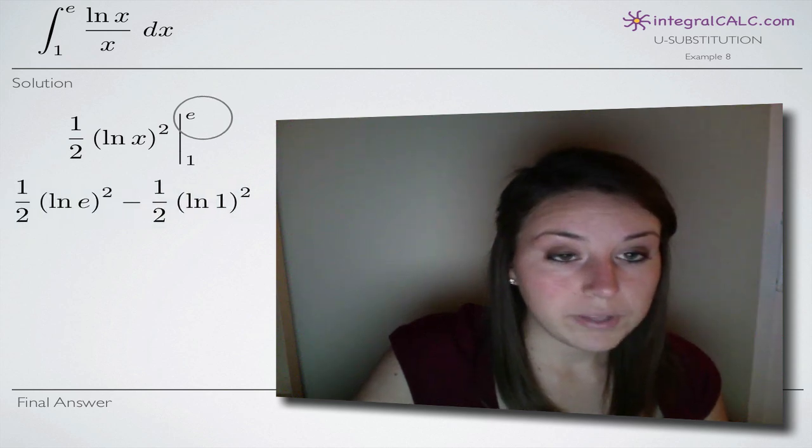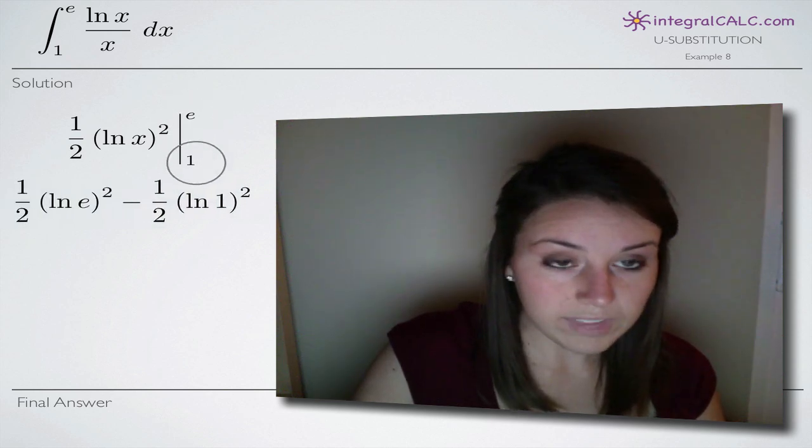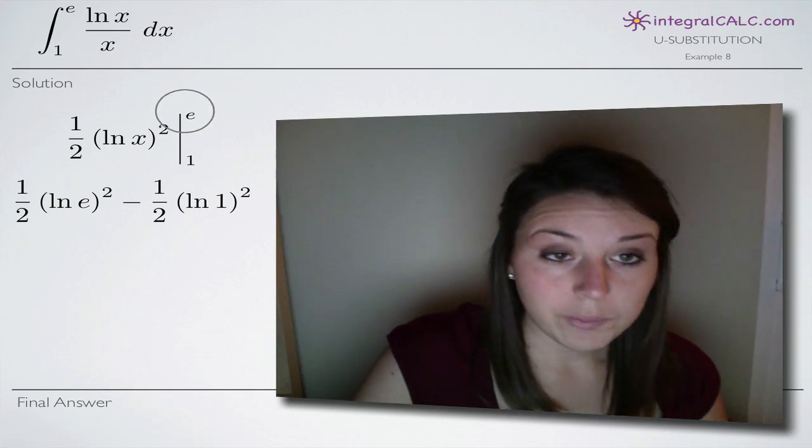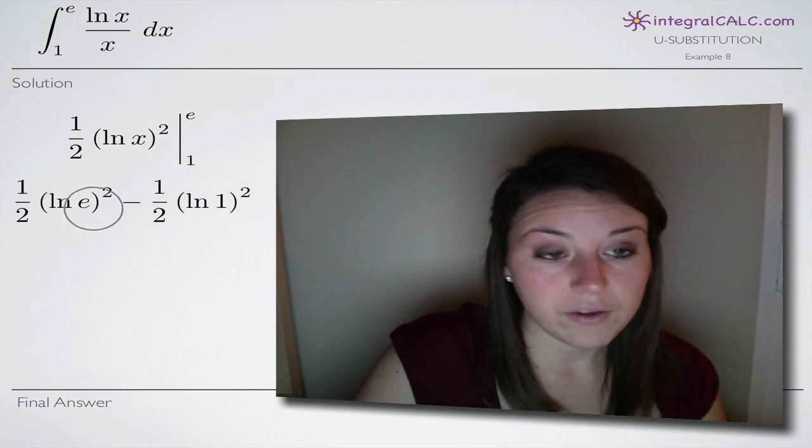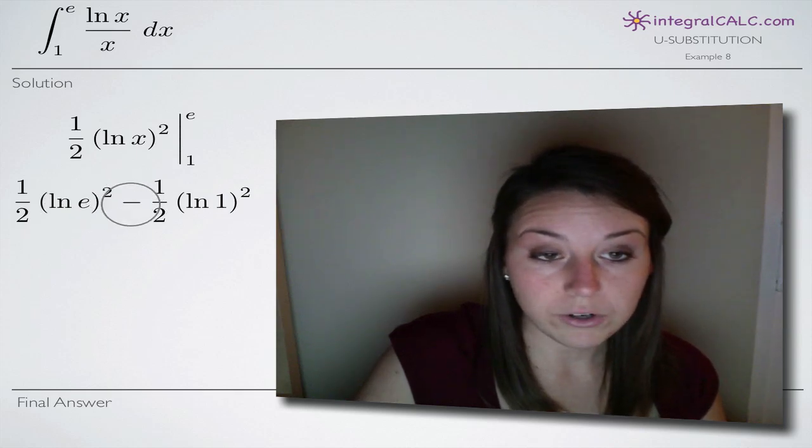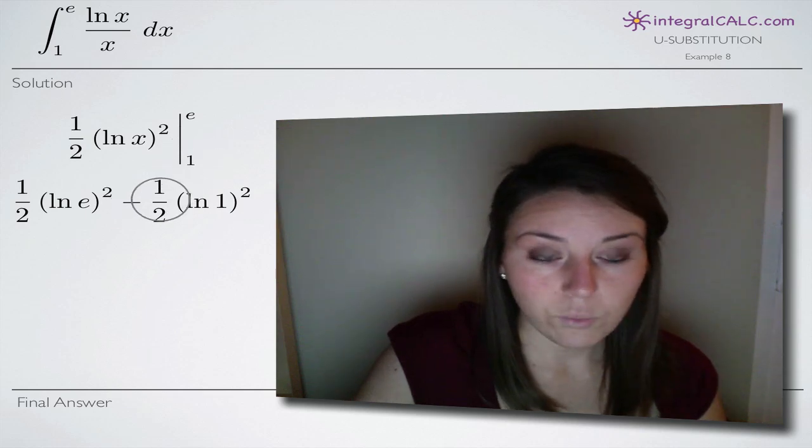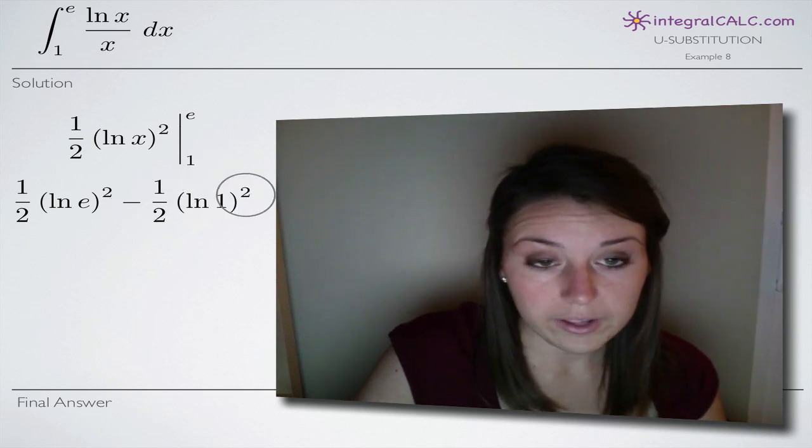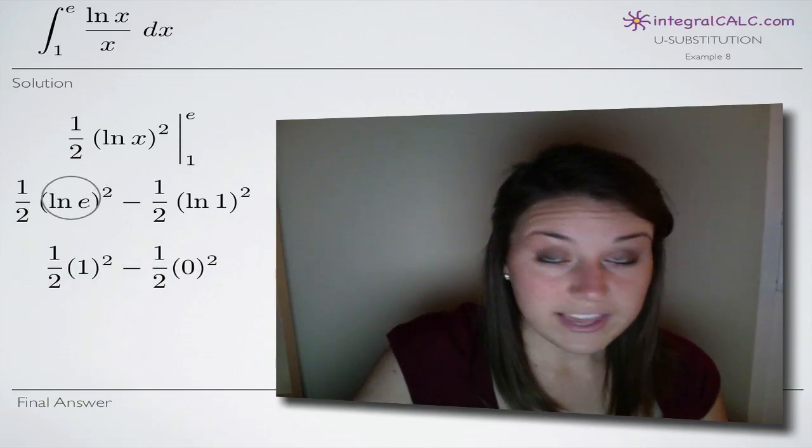So now we'll go ahead and plug in 1 and e. Remember that when we're evaluating a definite integral like this, we always plug in our top number first which is e. So you can see we have 1 half times ln of e squared and then we always subtract here in the middle and then always plug in our bottom number second. So minus 1 half times ln of 1 squared. Now when we simplify this, the natural log of e is equal to 1.